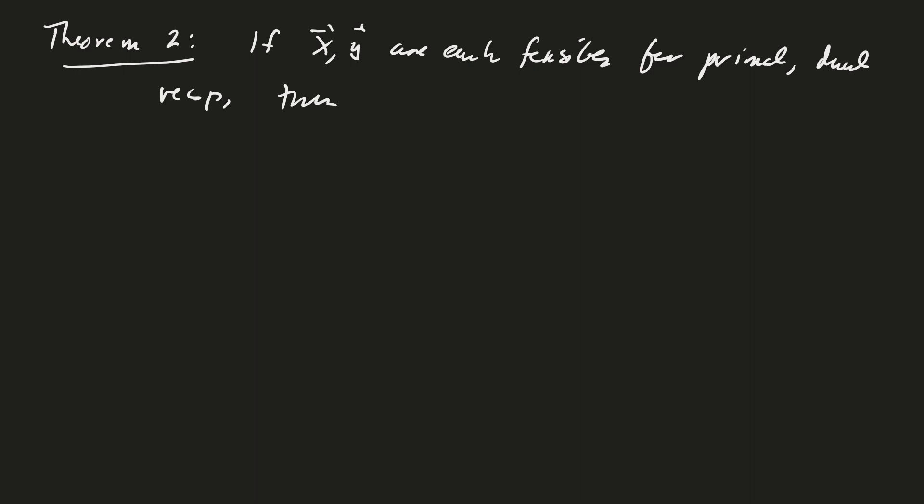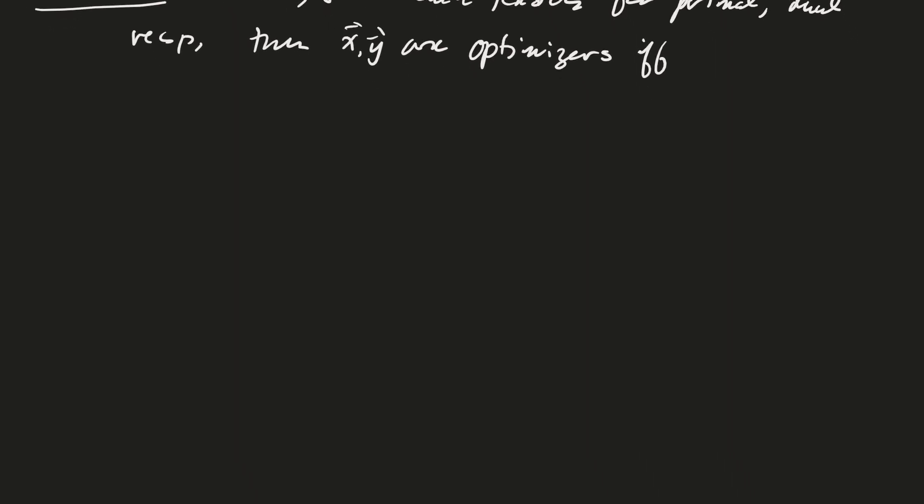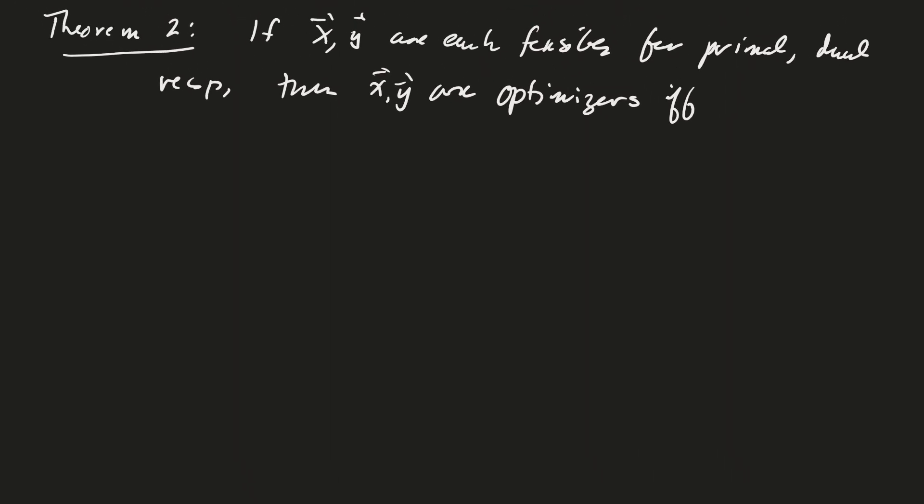Then the problems, you could say that x is the maximizer and y is the minimizer, or you can say that x and y are the optimizers if and only if we get a nice relationship happening.